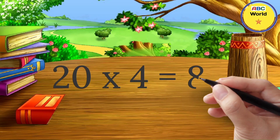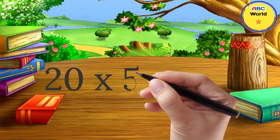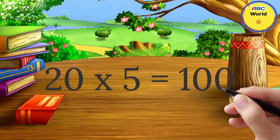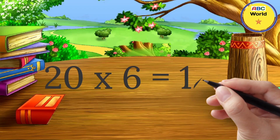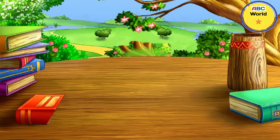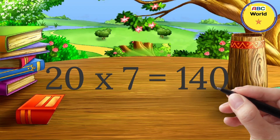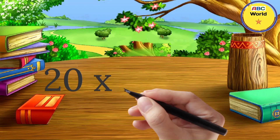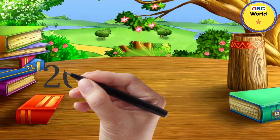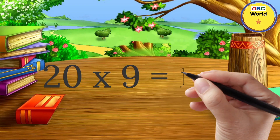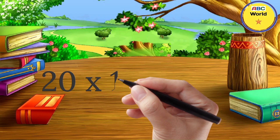20 × 4 = 80. 20 × 5 = 100. 20 × 6 = 120. 20 × 7 = 140. 20 × 8 = 160. 20 × 9 = 180. 20 × 10 = 200.